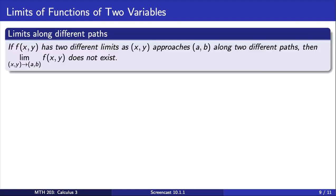If we can find two different paths approaching the point (a,b) that result in two different limits, then we can conclude that the limit of f as (x,y) approaches (a,b) does not exist.